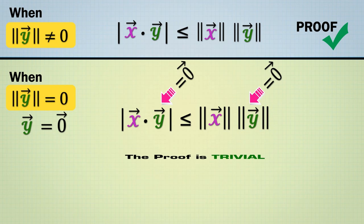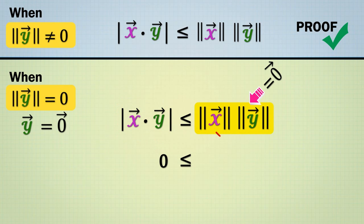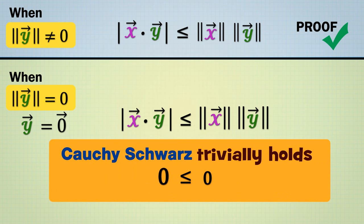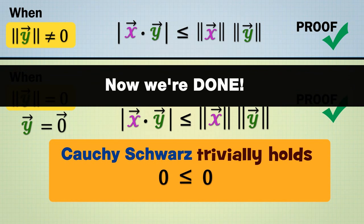Luckily though, the proof is trivial when y is zero since x dot y is zero and norm of x times norm of y is zero. Hence, Cauchy-Schwarz trivially holds as zero is less than or equal to zero. Now we're done.